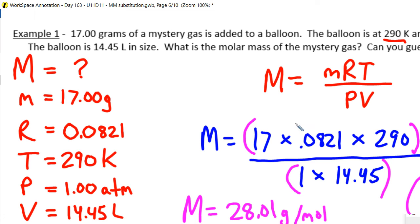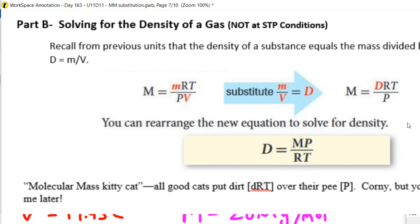it will be nitrogen. Alright, so that is how we can use this new equation, how we can find the molar mass of a gas, if we know all these other things.